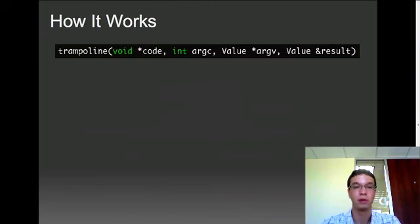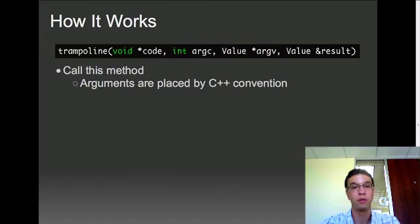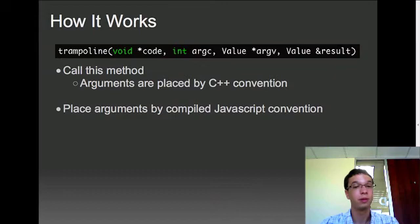So a little bit of how it works is you have a C++ function that kind of looks like this, and you call this method. The parameters are a pointer to memory, which represents the start of the compiled JavaScript code, the number of arguments, a vector of JavaScript values representing the arguments, and a value of a slot to put the result, the return value of the function. So we call this method, and the arguments are placed by the C++ convention. Then we need to replace those arguments by compiled JavaScript convention, and we need to do this in assembly language.